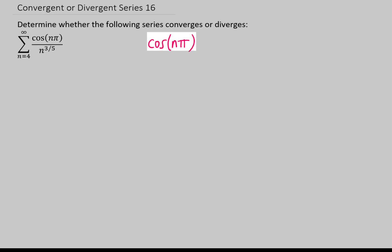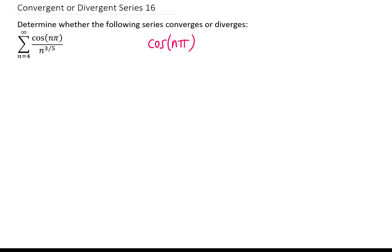If we think about cosine of n pi, if you plug in n equals 1, you'll get cosine of pi, which is negative 1. If you plug in n equals 2, you get the cosine of 2 pi, which is 1. If you plug in n equals 3, you get the cosine of 3 pi, which is negative 1, and you can keep going with that.